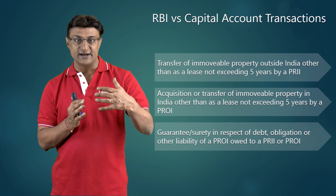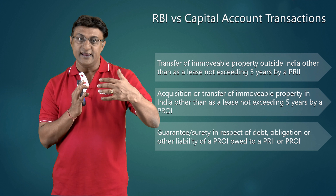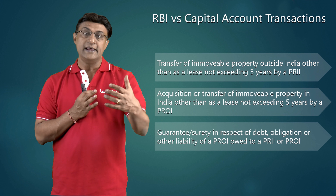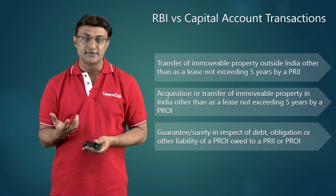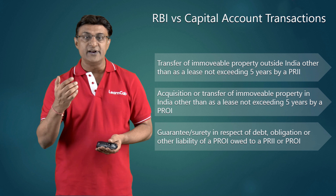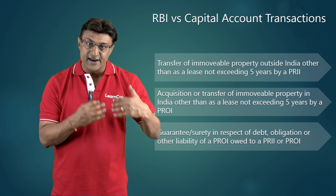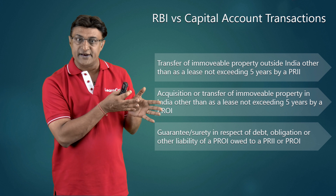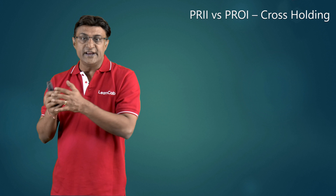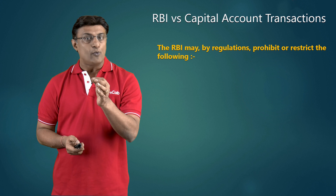Next: transfer of immovable property outside India — other than as a lease not exceeding five years — by a person resident in India can be regulated. We are dealing with a set of transactions which can be regulated, monitored, or restricted by the RBI. Also: acquisition or transfer of immovable property in India — other than as a lease not exceeding five years — by a person resident outside India. We have seen this provision under Section 4; a lease not more than five years is permitted.